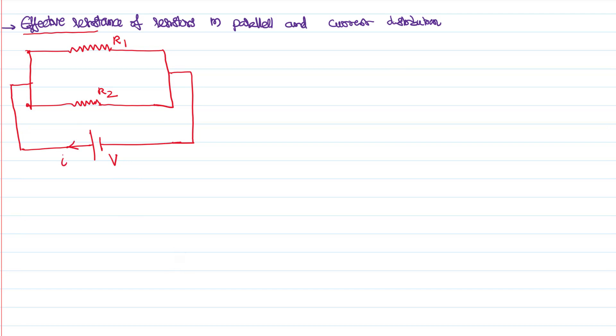From the positive plate of the battery, a current I starts and comes up to here. Now, current has two ways to go. Some part of the current will go through resistance R1, some other part will go through resistance R2. Both of them will combine together, become I, and come back to the negative plate of the battery.